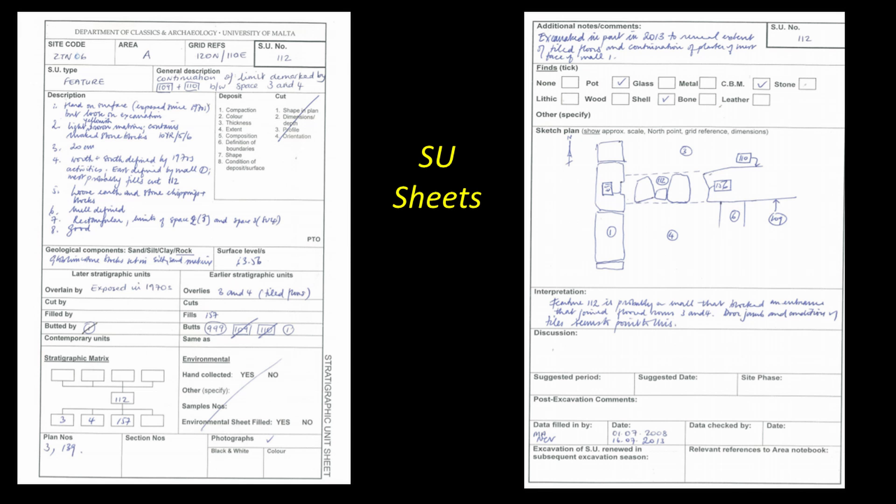The need to maintain a record is very important to archaeologists. Every deposit or cut has a separate written description, compiled on a general stratigraphic unit record sheet, or SU sheet for short. Each sheet has a set of key categories which need to be filled for each SU, including color, compaction, and thickness.